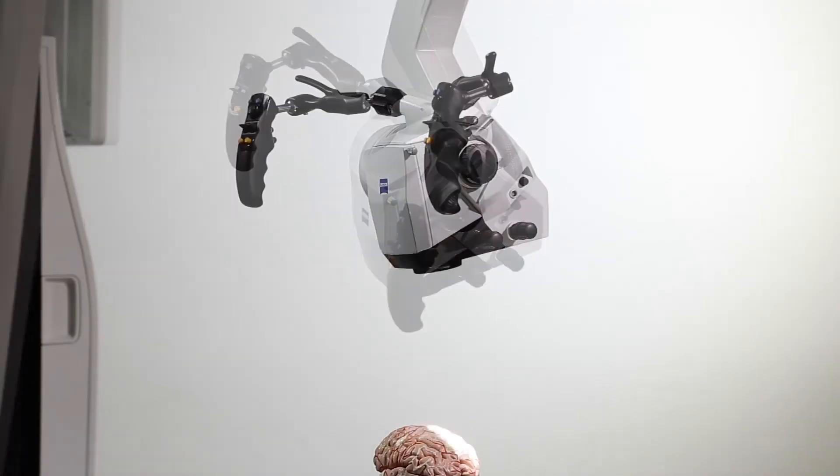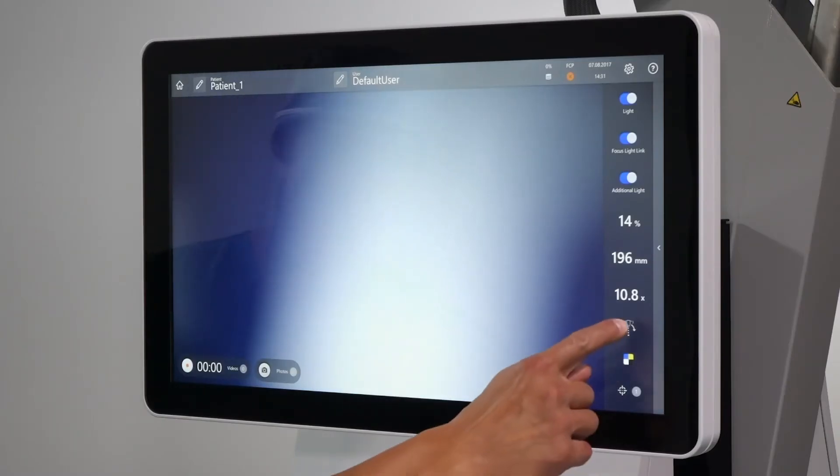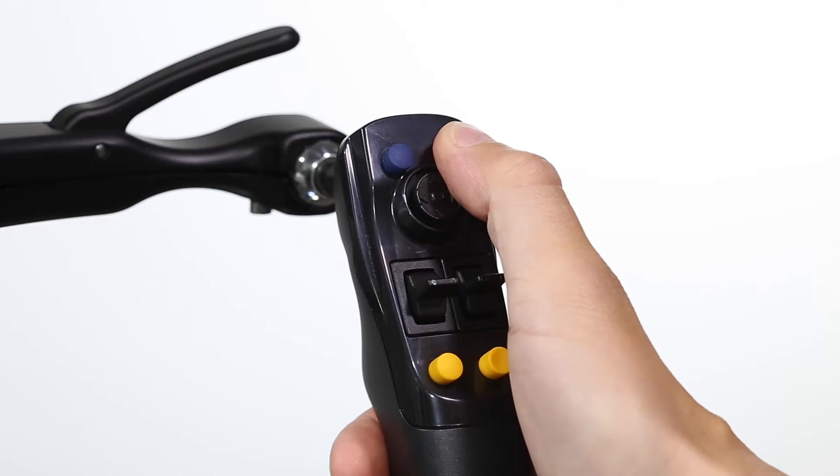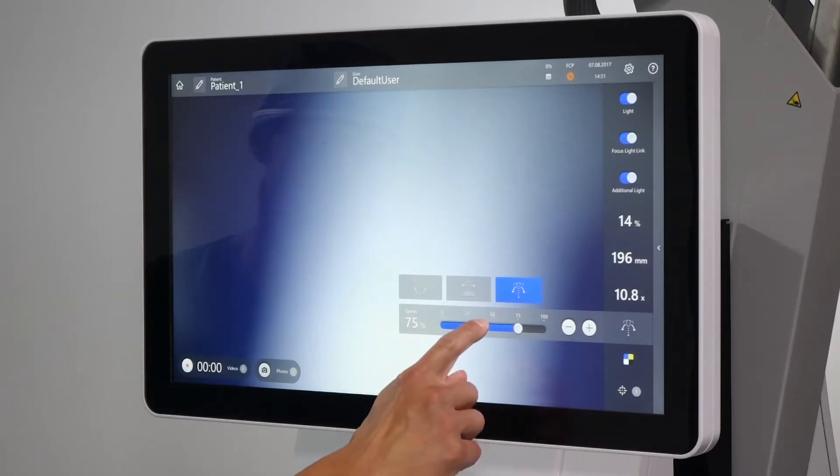The surgeon-controlled robotics of Zeiss Kinevo 900 enables several motorized movement modes. These can be activated via the user interface, handgrip, or foot control panel. Speeds can be adjusted in line with the movement mode.